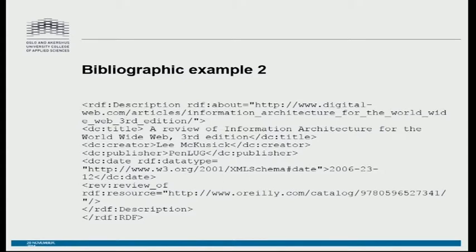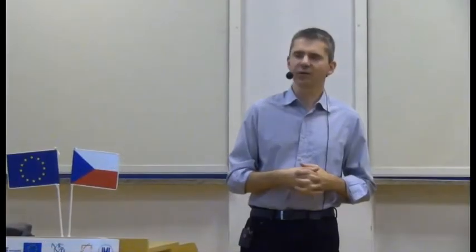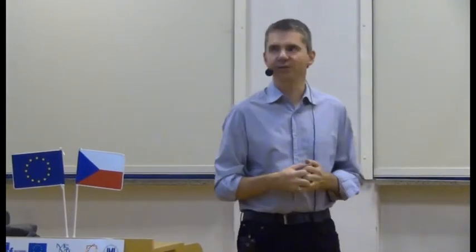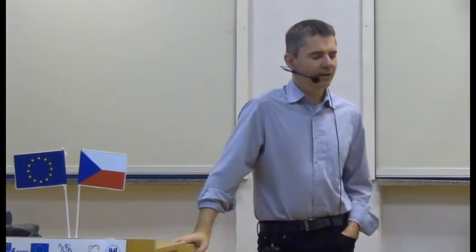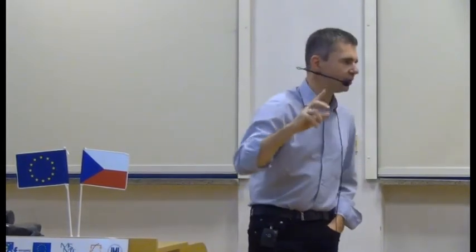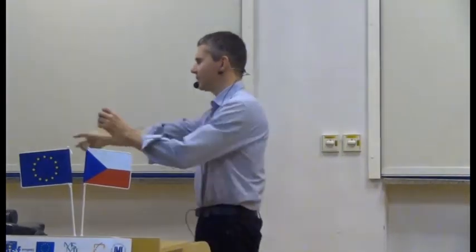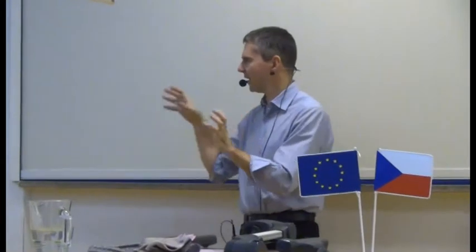The second resource — DigitalWeb.com/articles/information-architecture-for-the-world-wide-web-3rd-edition — has its own properties: a title 'Review of Information Architecture for the World Wide Web,' a creator Lee McCosick, a publisher Penlug, and a property 'review of' pointing back to the O'Reilly URI. So we are establishing a link between the book and the review of the book using RDF as the building block.